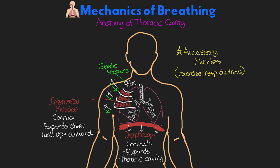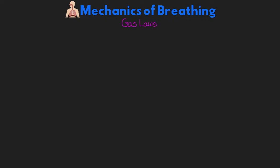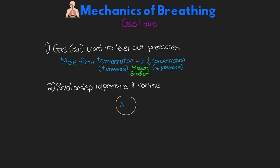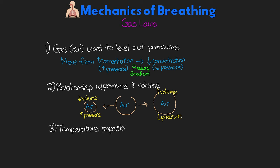Before going into more about how breathing works, I want to talk about some important concepts when it comes to gases — our gas laws. First, gases will want to level out their pressures, meaning air will move from an area of higher pressure to lower pressure, down its pressure gradient. Next, you need to understand the relationship between pressure and volume: if the same amount of air is in a smaller volume, pressure is higher; if in a larger volume, pressure is lower. Lastly, temperature also impacts pressure — higher temperatures lead to higher pressures, and lower temperatures lead to lower pressures. Think of the air in your tires: in winter when it's cold outside, you have to add air because the pressure is low.